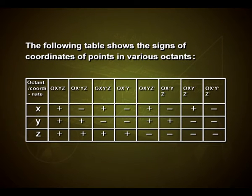The following table shows the signs of coordinates of points in various octants. For octant OXYZ, the coordinates x, y and z are all positive. In octant OX'YZ, x is negative while y and z are positive. In octant OXY'Z, x and z are positive and y is negative. In octant OX'Y'Z, x and y are negative and z is positive. In octant OXYZ', x and y are positive and z is negative.